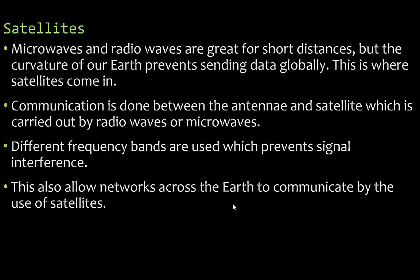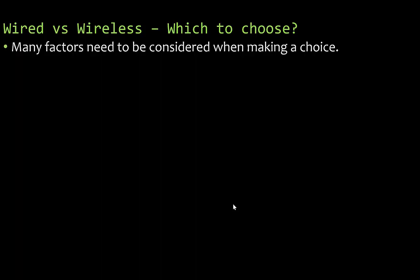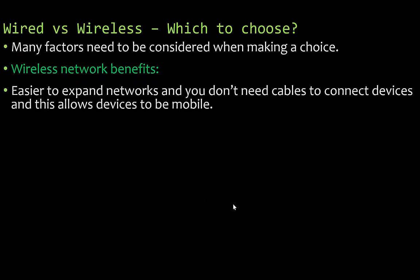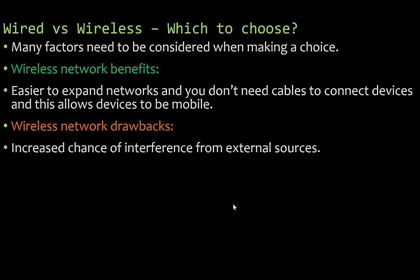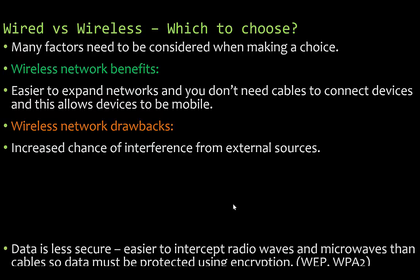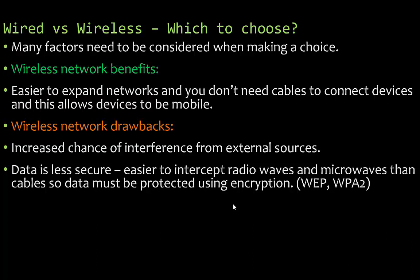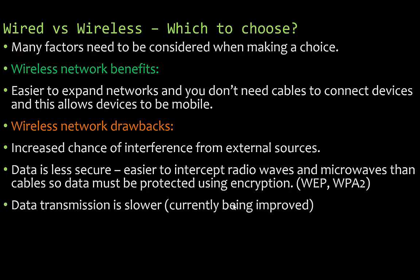When choosing between wired and wireless, many factors need to be considered — this may come up on your Cambridge exam. Wireless network benefits: it's easier to expand networks, no cables needed, and devices can be mobile. Drawbacks: increased chance of interference from external sources; data is less secure since it's easier to intercept radio waves and microwaves, so data must be protected using encryption such as WEP key or WPA2 key; and data transmission is slower, though currently being improved. When directly connected you get the fastest transmission.